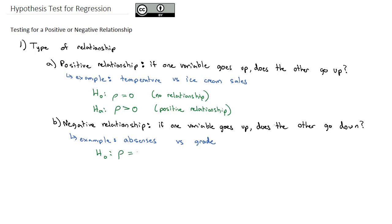So to test this negative relationship, the null hypothesis would still be rho equals 0, indicating no relationship. And the alternative hypothesis would be that rho is negative, less than 0, meaning we have a negative relationship.